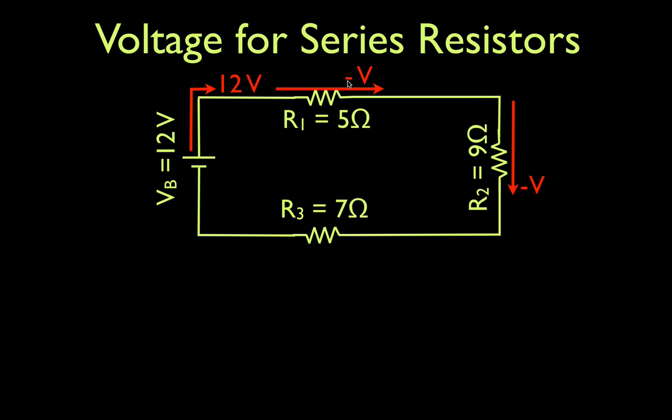Then the current has less energy. It's the same current, but it has less energy. It's going to go through the second resistor, lose some more energy, and go through the third resistor and lose some more energy. So the current is remaining the same, but the amount of energy it has is decreasing.